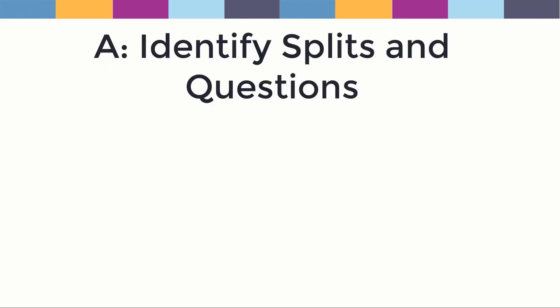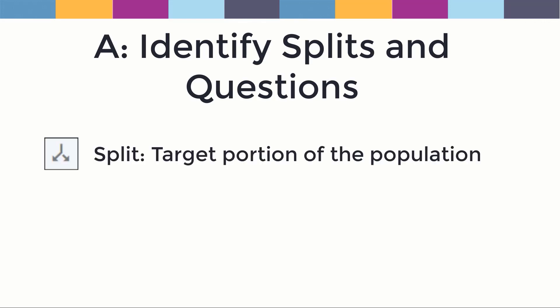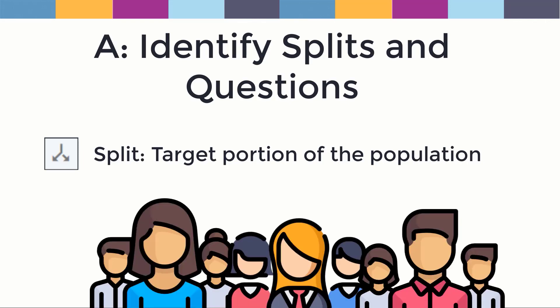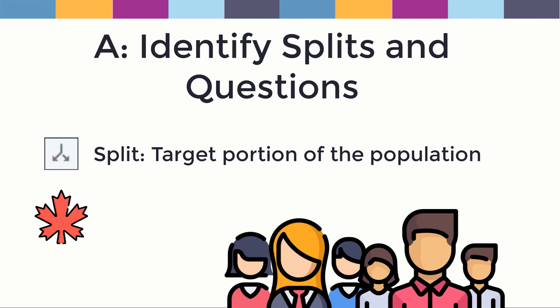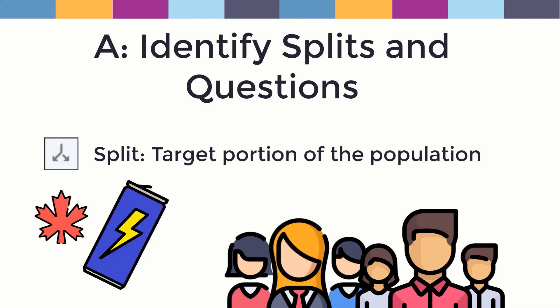A. Identify splits and questions. We will use the category of splits and questions to construct our table. Splits represent our target portion of the population — think of this as the group about whom we want to know something. In this case, it's Canadian Red Bull drinkers. More specifically, we are interested in Canadians who are 14 years or older who claim that Red Bull is the energy drink brand they purchase most often.